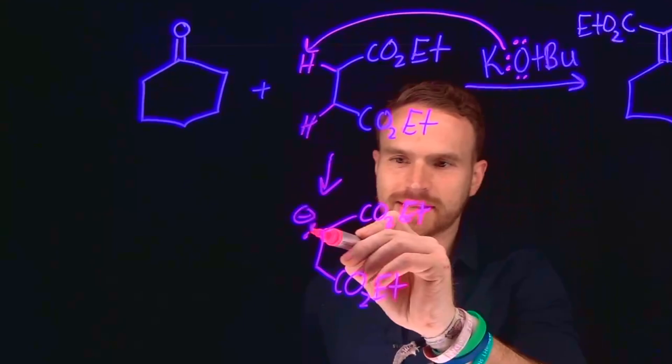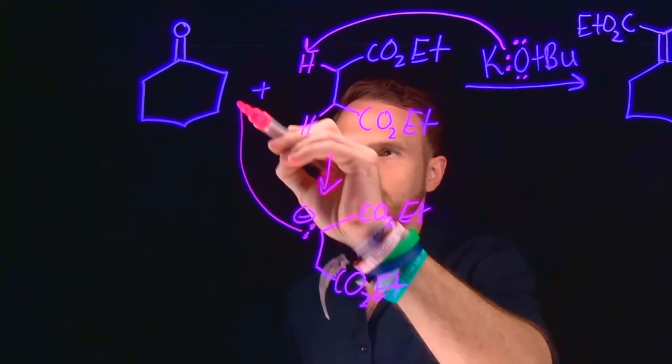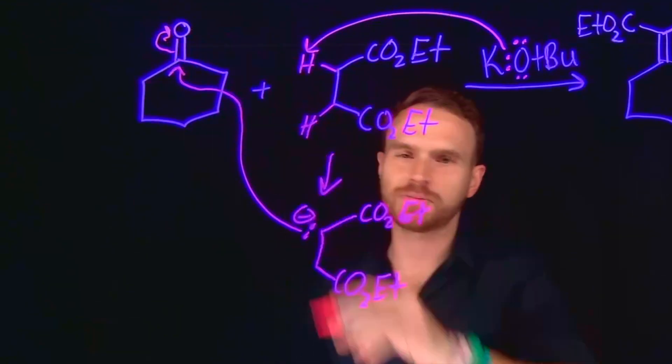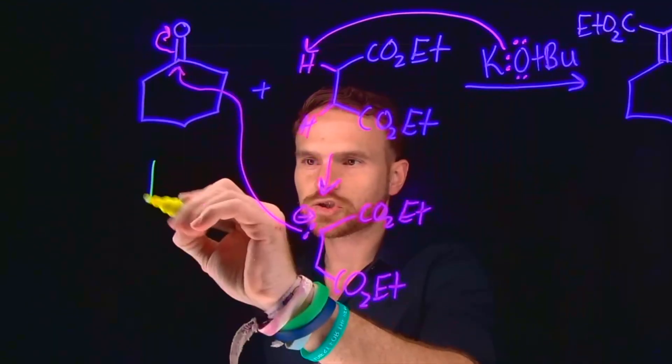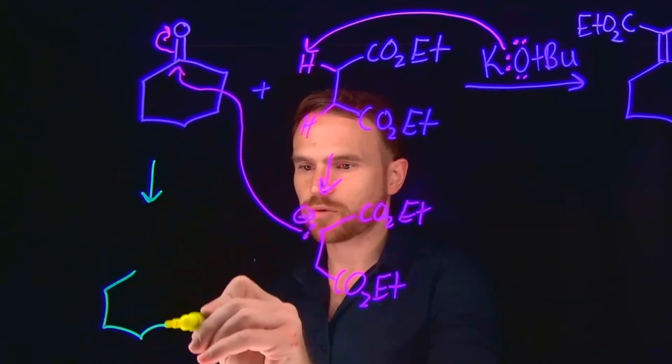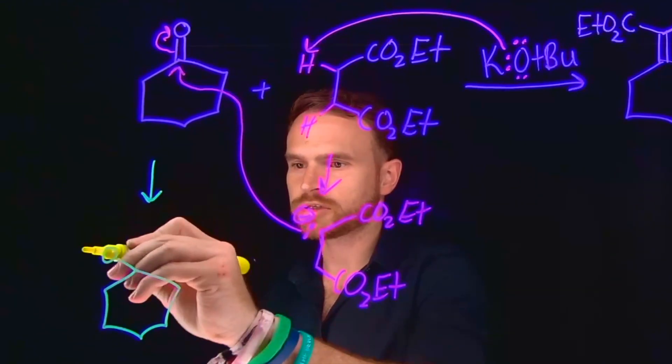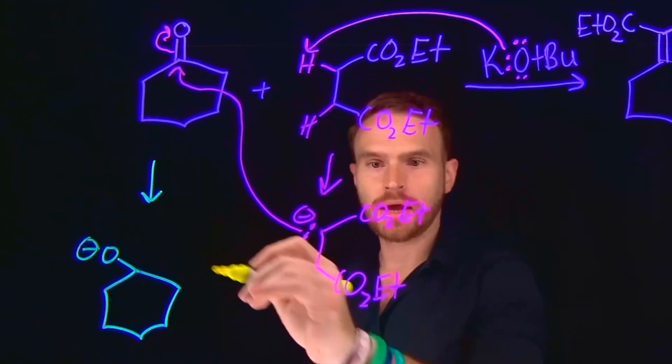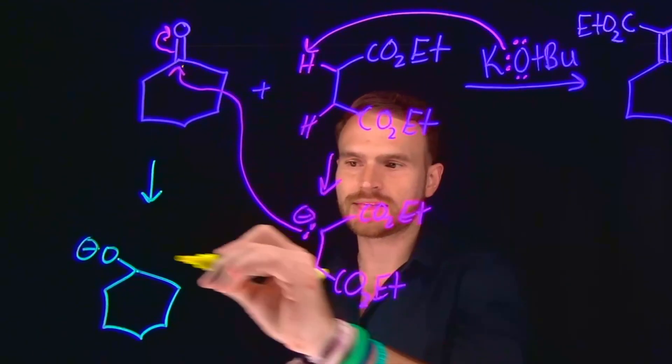What that means then is that this carbon position can come and attack electrophiles like this electrophilic carbon as part of this carbonyl compound which will kick up these pi electrons. The product of this transformation is going to be that six-membered ring, which now has a negatively charged oxygen on it, as well as two of these esters. Notice that this carbon and this carbon is what is attached.